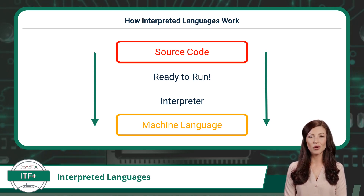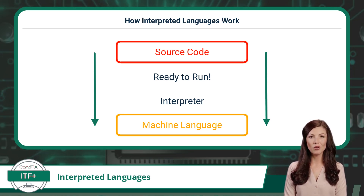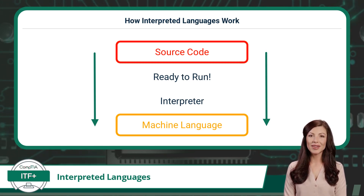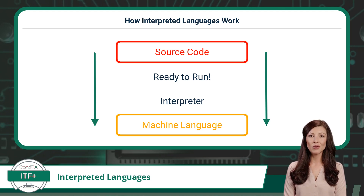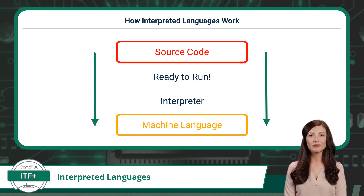Now, here's an important aspect of interpreted languages — they are cross-platform. An interpreted program is more flexible in terms of platform, meaning the same program can run on different types of computers without needing to be rewritten or recompiled. Interpreters adapt the code on the fly to match the computer's specific architecture, making it easier to create software that works on various platforms. As a downside, since the program has to be translated to machine code line by line at runtime, it will execute or run a bit slower.